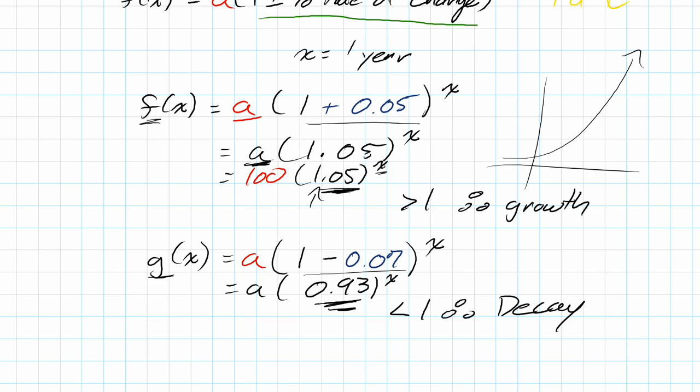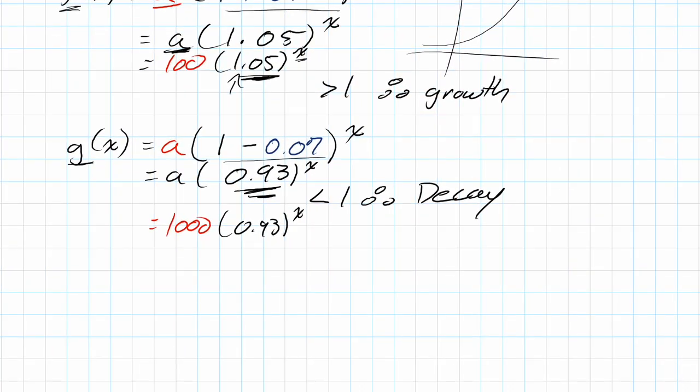Anytime we're less than 1, we are shrinking. Anytime we're greater than 1, we are growing in value. And let's say we started with 1,000 of something. Our a value would be 1,000 times 0.93 to the x. And then that would again give us a relationship that looks like this. We have a decaying relationship instead.